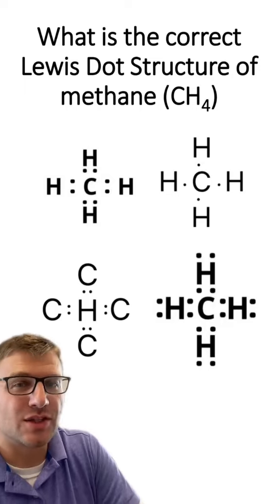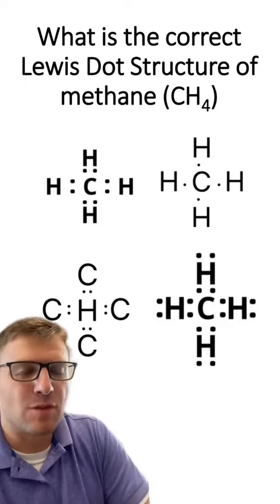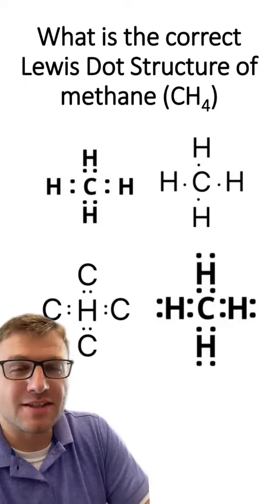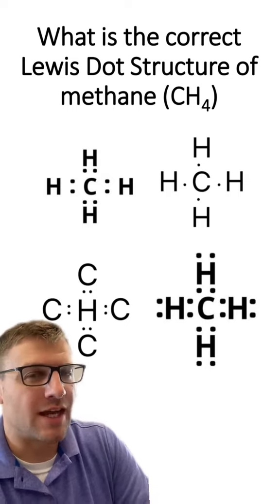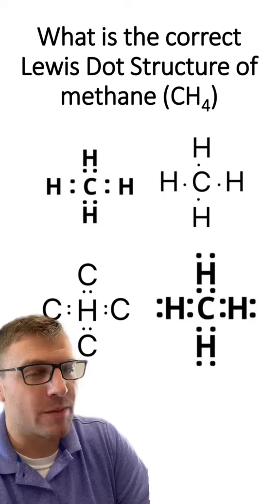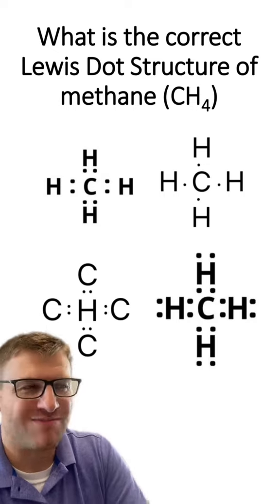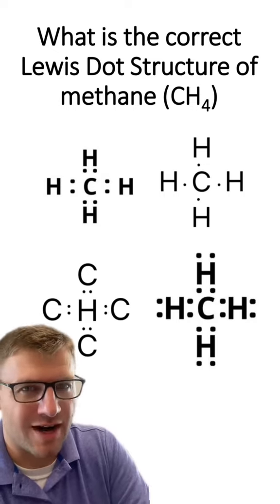What is the correct Lewis dot structure of methane? The chemical formula of methane is CH4. Hydrogen only has one valence electron, while carbon has four. This should help you figure out what goes where.